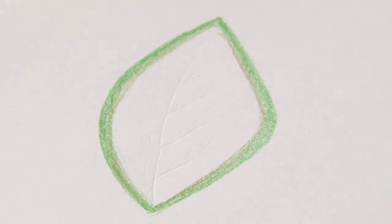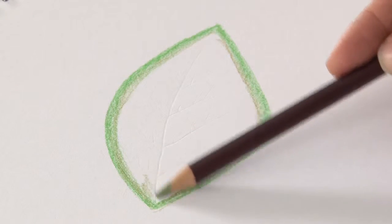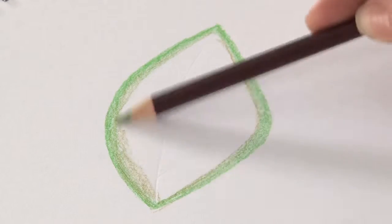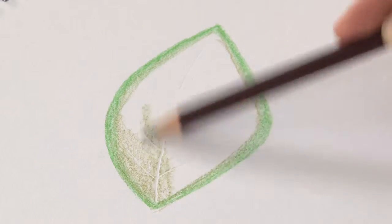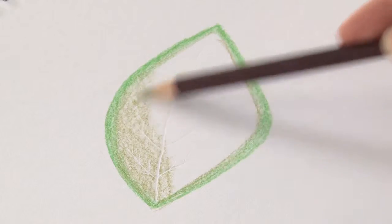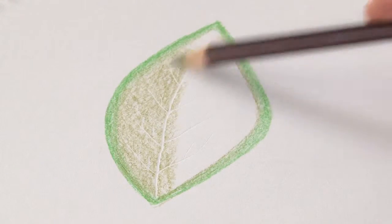Now all we do is start coloring over the top of that. So I'm going to start off with a pale green and with a pencil on its side I'm just going to start rubbing gently over the top. Now you can see the indents starting to show up.